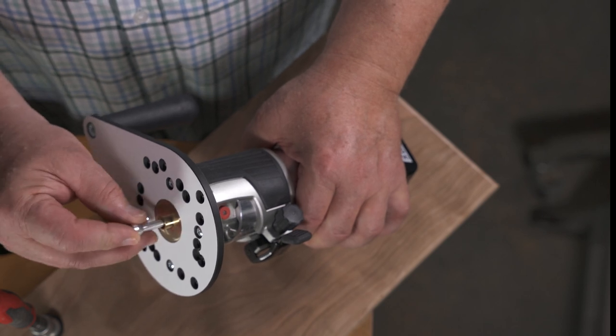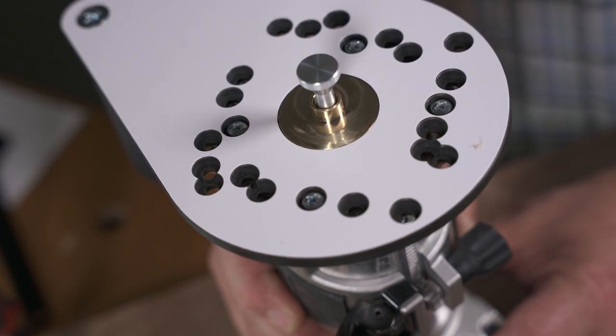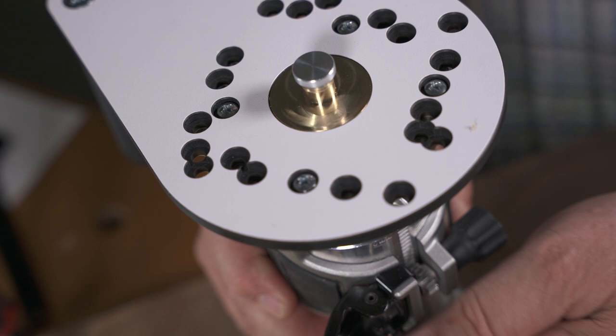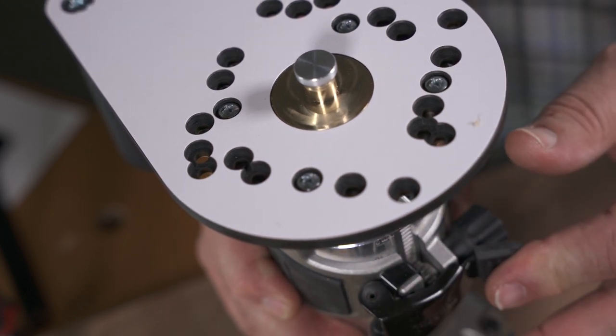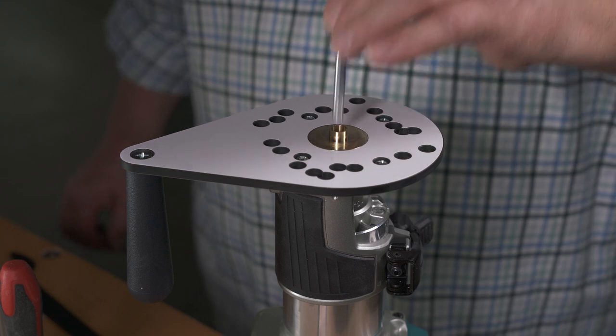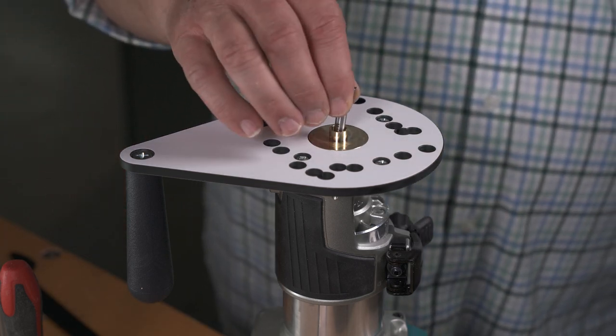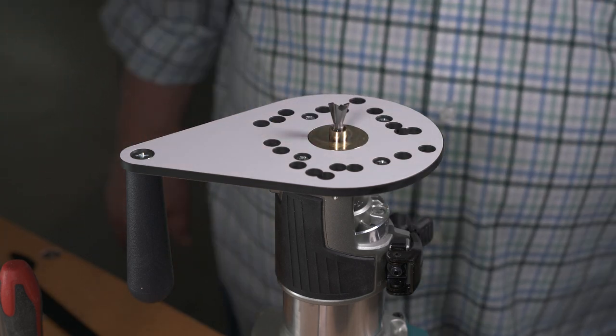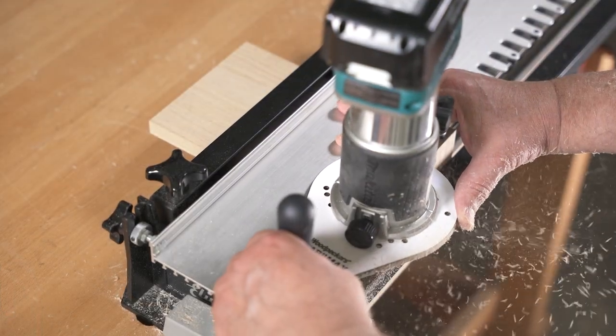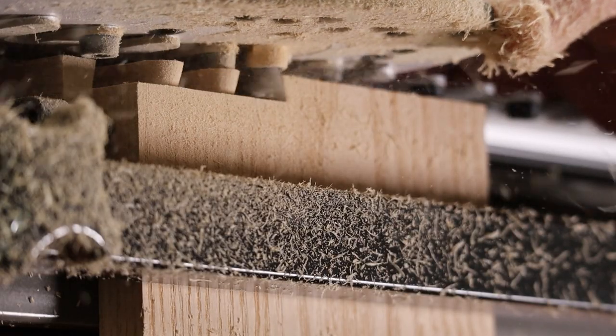Put the included centering pin in the collet. Adjust the depth so the pin engages the guide bushing. Lock the base and replace the centering pin with your router bit. You're ready for flawless guide bushing routing with your trim router.